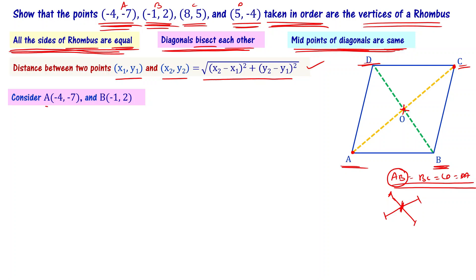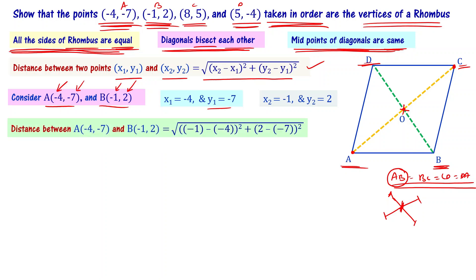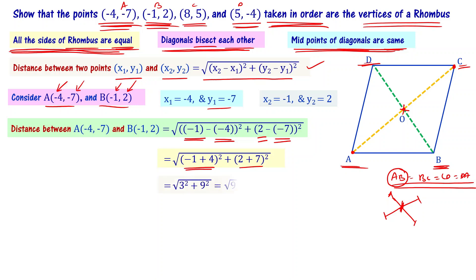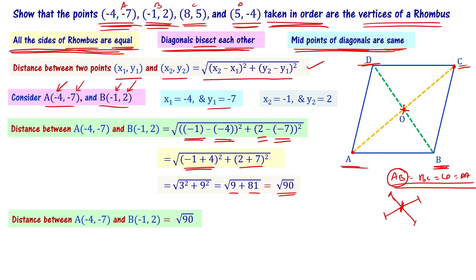Let's find the distance between A and B. Here x1 is minus 4, y1 is minus 7, x2 is minus 1, and y2 is 2. Substituting into the distance formula: square root of (minus 1 plus 4) whole square plus (2 plus 7) whole square, which gives square root of 3 squared plus 9 squared, that is square root of 9 plus 81, equal to square root of 90.